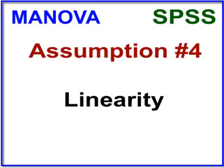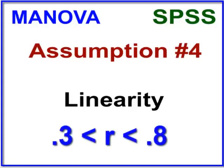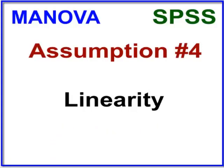The next assumption is linearity — specifically the linearity between the dependent variables only. We want all of our DVs to be moderately related, meaning correlated somewhere between r = 0.3 and r = 0.8. We don't want them too strongly correlated, as that would cause multicollinearity problems. To check this, we're going to use a matrix of scatter plots, which takes each DV from each level of the IV and creates a bunch of little scatter plots so we can look for a central linear pattern.